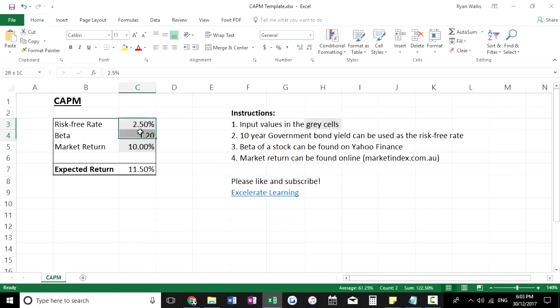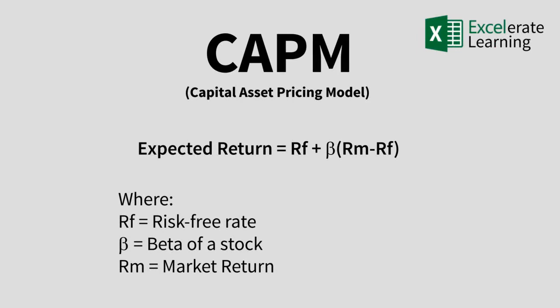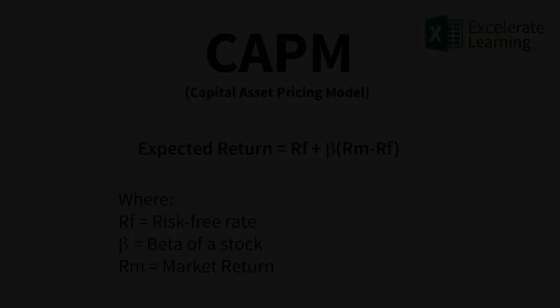Alright, I'll bring the formula up on the screen now. You can see it's quite simply just the risk-free rate plus the beta of a stock, multiplied by the market risk premium — which is this calculation in the brackets. That is just the expected annual return on the market minus the risk-free rate, used to compensate us for the extra risk of investing in the stock market.